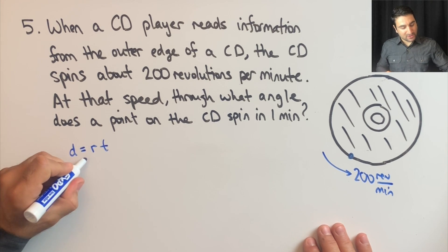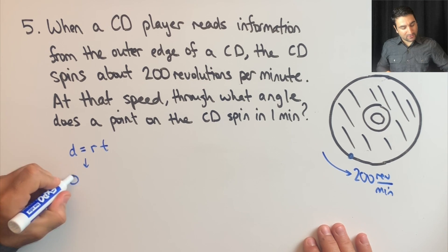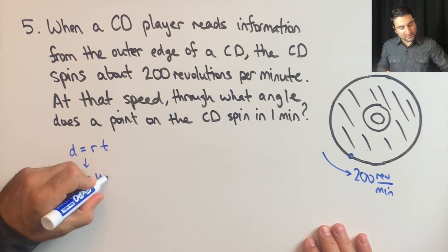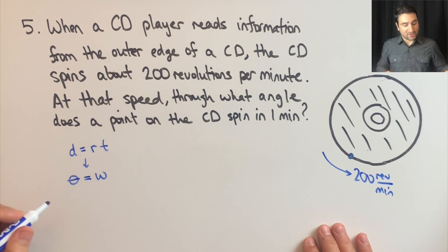the distance equivalent for an angle is theta, and R is omega, which rate would be revolutions per second or minute, as opposed to meters per second or meters per minute.